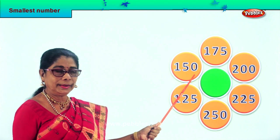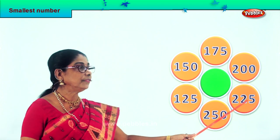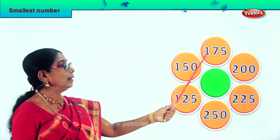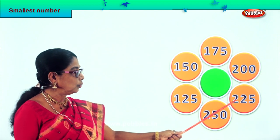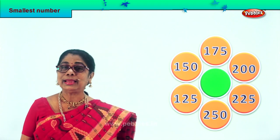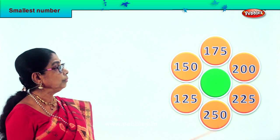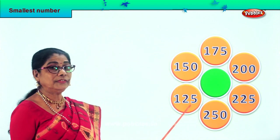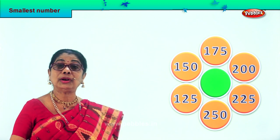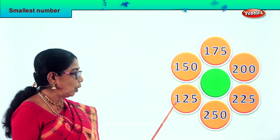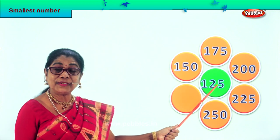Let's look at another sum. Let's say aloud the numbers: one hundred fifty, one hundred twenty-five, two hundred fifty, two hundred twenty-five, two hundred, one hundred seventy-five. We have numbers in two hundred and one hundred — three one-hundreds. In the one hundreds, let's look at the tens place to identify the smallest: seventy-five, fifty, twenty-five. Which is smallest — fifty or twenty-five? Definitely twenty-five. So one hundred twenty-five is the smallest among the six numbers. We take one hundred twenty-five and put it in the middle.